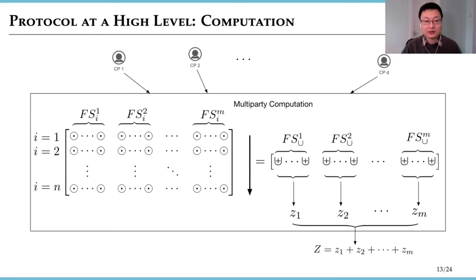In the protocol, the FM sketches in the same column are merged into a union FM sketch. Then from each union FM sketch, a Z value is extracted. In the end, the protocol outputs the sum of all Z values and the sum can be used to estimate the union cardinality.